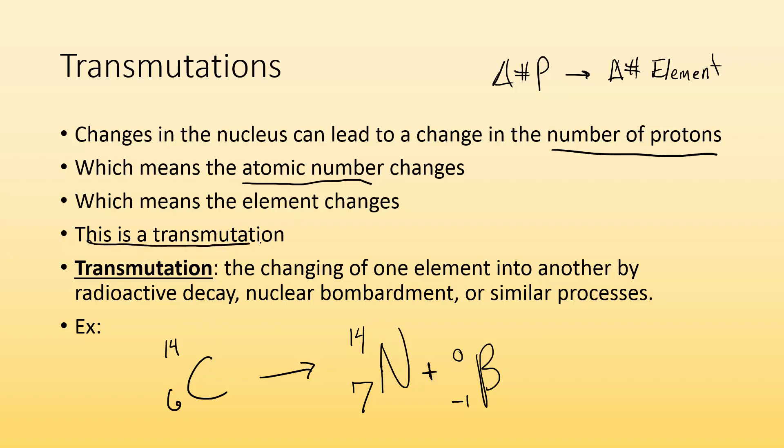This is transmutation. Transmutation is the changing of one element into another by radioactive decay, nuclear bombardment, or some similar process. Here's an example. I started with carbon that had six protons. It went through some nuclear decay, and now the nucleus has seven protons, which is atomic number seven, changing the element. How did it do that? It gave off a beta particle.